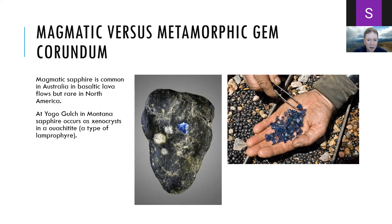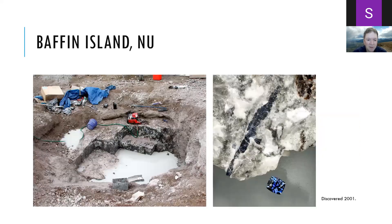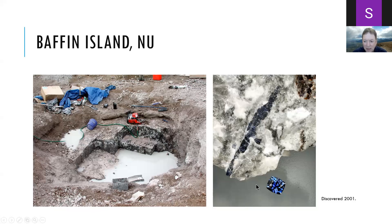There are quite a few metamorphic gem corundum occurrences in North America. The sapphires on Baffin Island in Nunavut were discovered in 2001. The area is called the Beluga Pit, and the rock has a distinctive mottled purplish-brown and white coloring, with the sapphires found in the white parts.